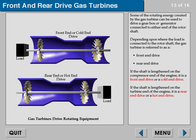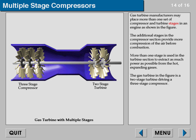Gas turbine manufacturers may place more than one set of compressor and turbine stages in an engine. The additional stages in the compressor section provide more compression of the air before combustion. More than one stage is used in the turbine section to extract as much power as possible from the hot expanding gases.